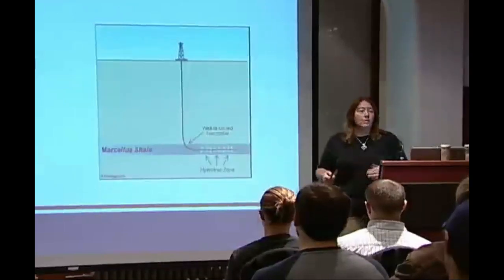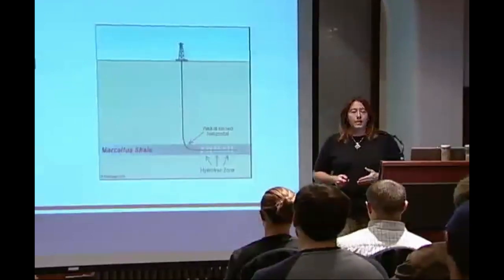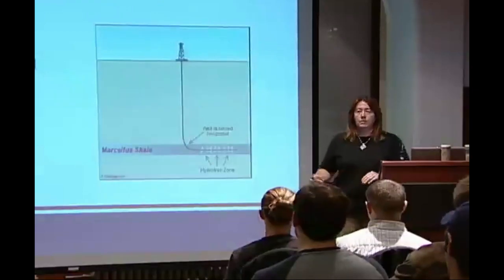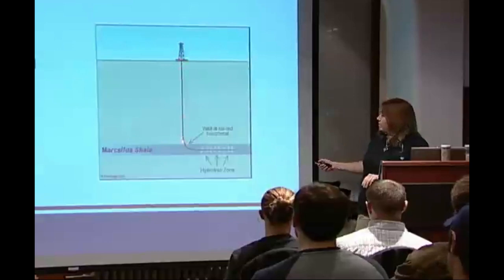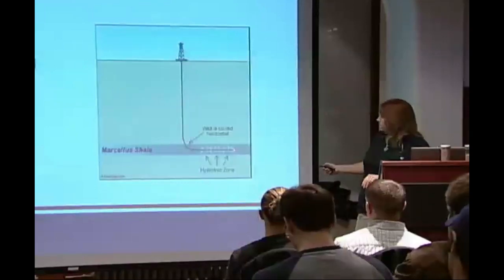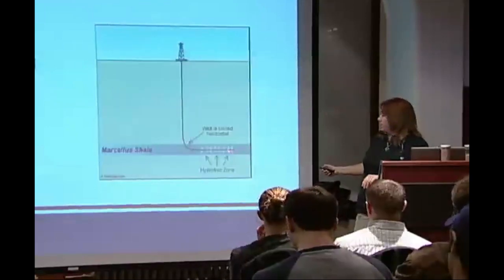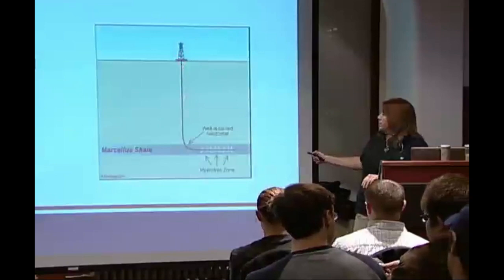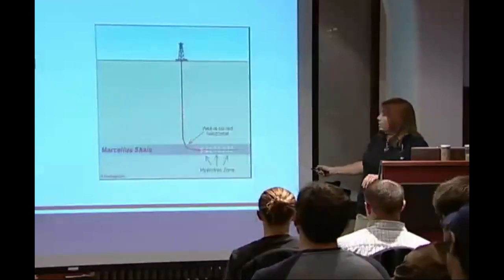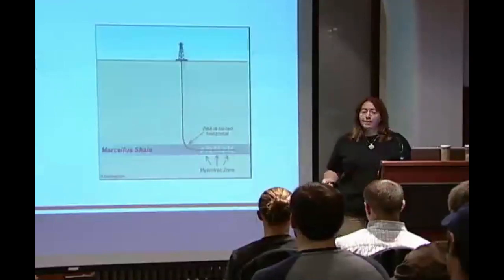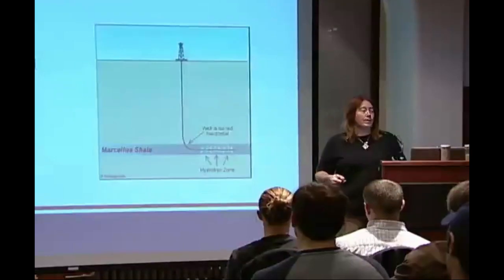Now, once they reach their limit of how far they want to go horizontally, the next step is to case the well. What they do is they pump cement down the shaft all the way down. There's a tube here that they've put in to do the drilling. And when it gets to the end of the tube, they keep pushing the cement in, and it comes out to the outside of this tube and goes all the way back up to the surface. So they've completely cased this well in cement. This keeps it open and also protects the surrounding rocks from any kind of leakage of the natural gas as it comes back out.